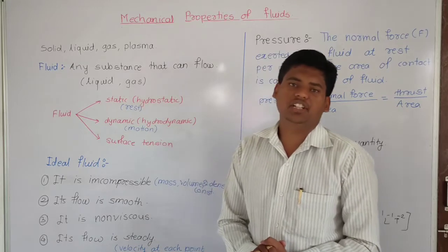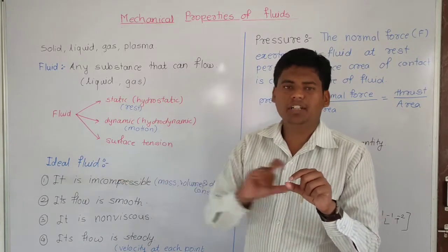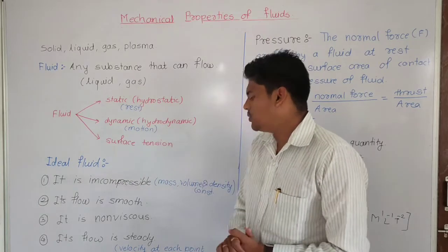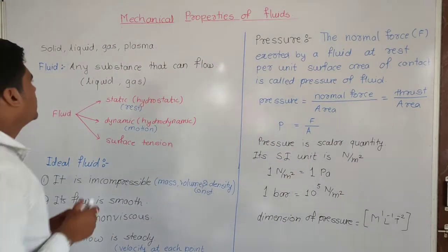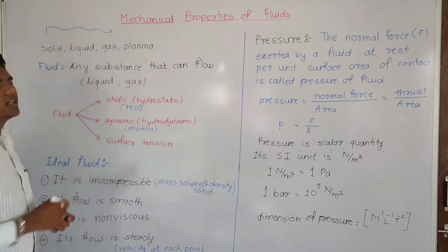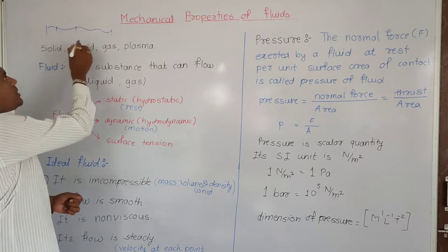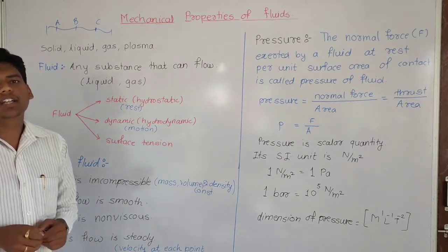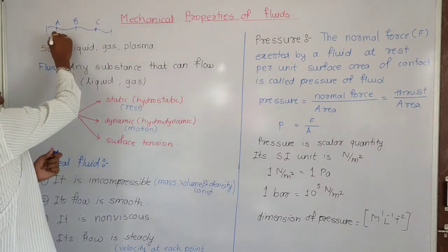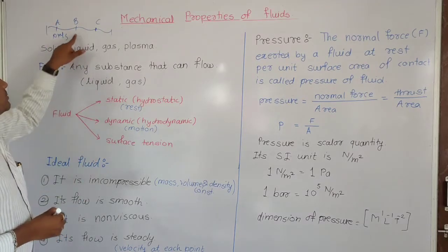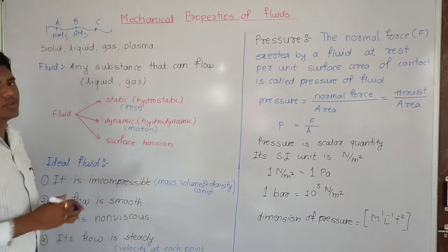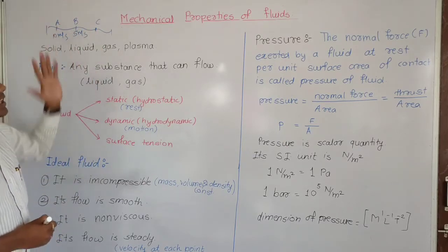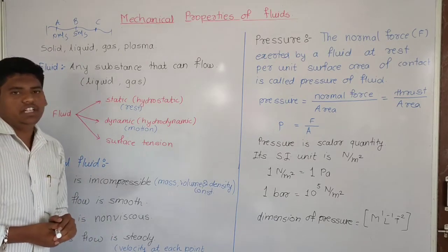The next concept is that the flow is steady. If you consider a point, say 100 meters, the speed and velocity at that point remain constant over time. For example, at points A, B, and C along a fluid flow, the velocity at point A is 10 meters per second, it may change to 5 meters per second at B, but at each fixed point the velocity remains steady. This is called steady flow.